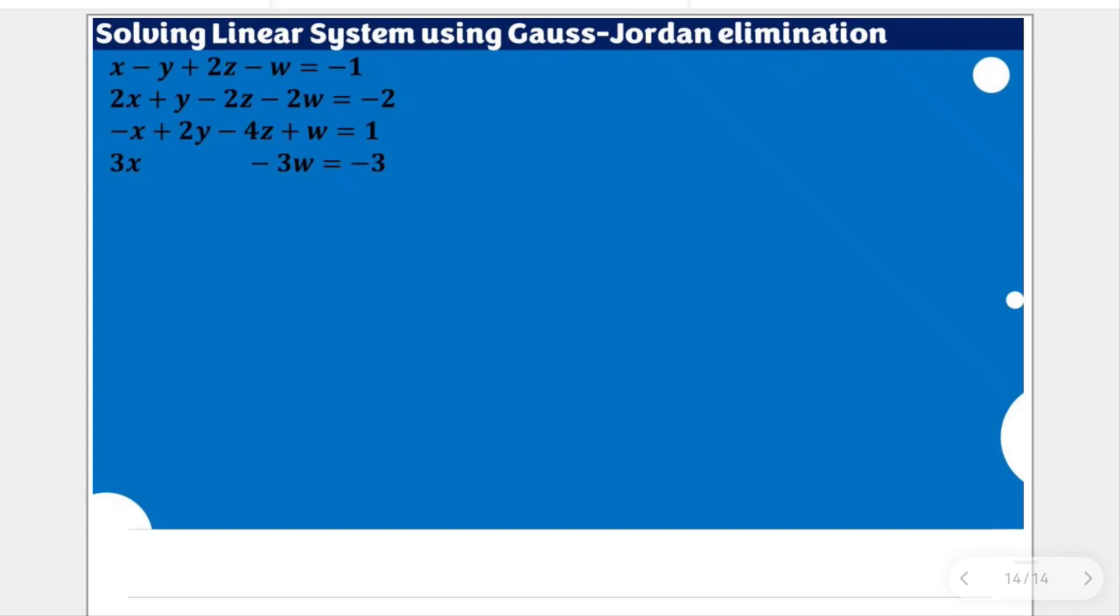And with that, let me just use the row echelon form from the previous video. I don't need to be stressed with why we will use the row echelon form, because Gauss elimination is part of the Gauss-Jordan elimination.